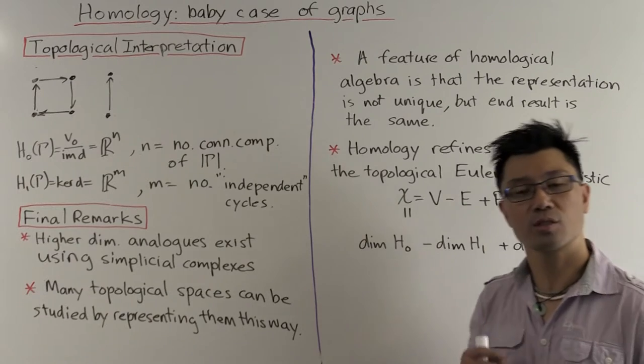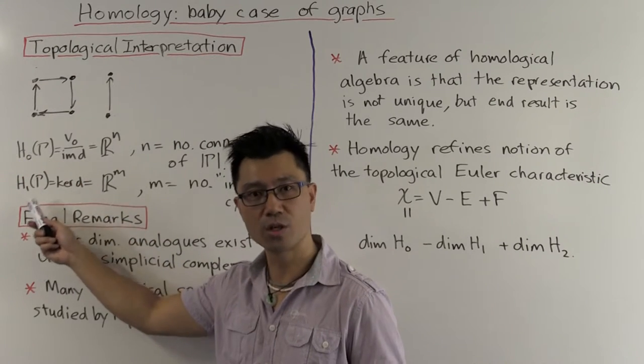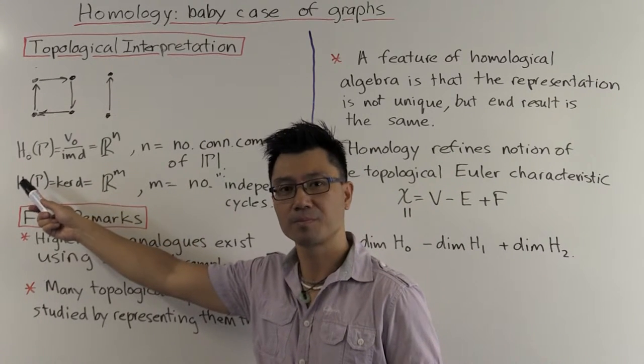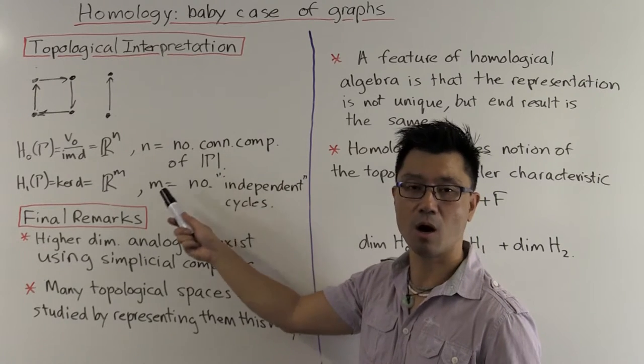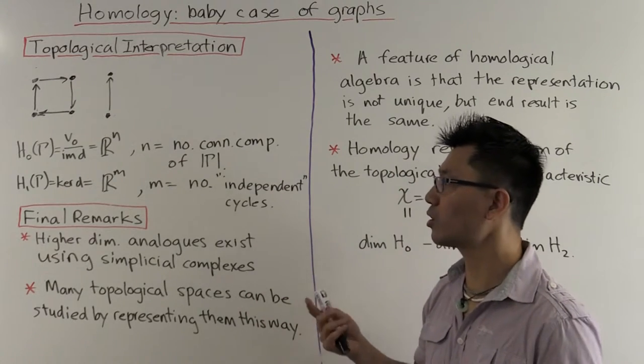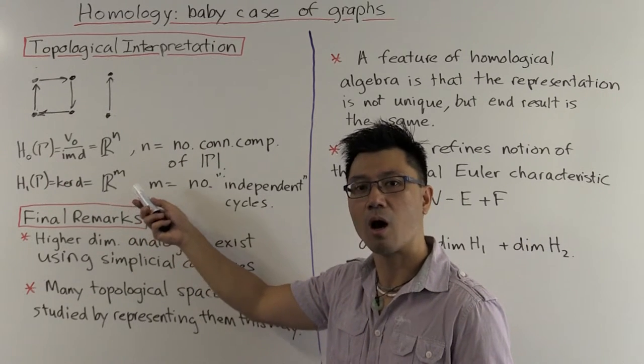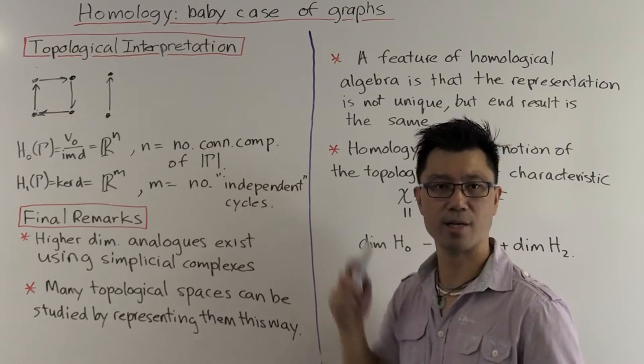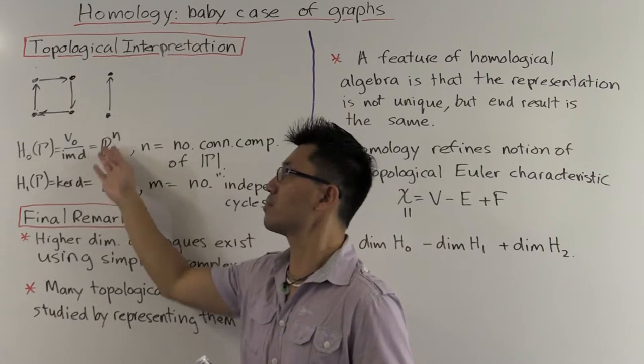Okay, so what topological information is captured in these two algebraic objects, the 0th homology and the 1st homology? Well, I claim the following. This 0th homology just is R to the n, where n is the number of connected components of the underlying topological space. And in many ways, we kind of expect this, because how do we construct this homology? How do we motivate this? We use a linearized version of the equivalence relation used to capture the connected components graph theoretically. So this is something that you would expect.